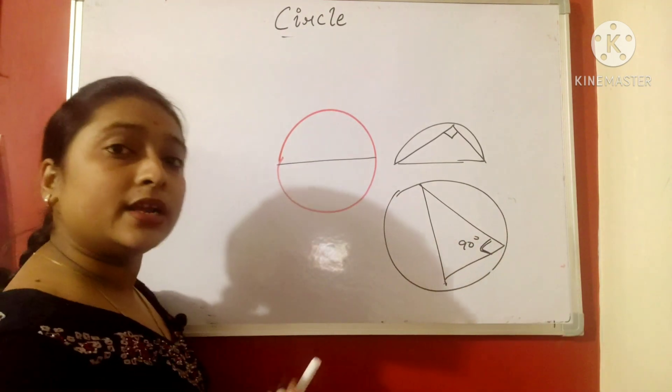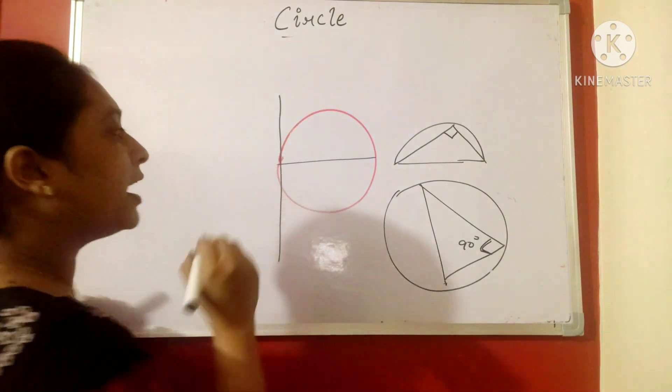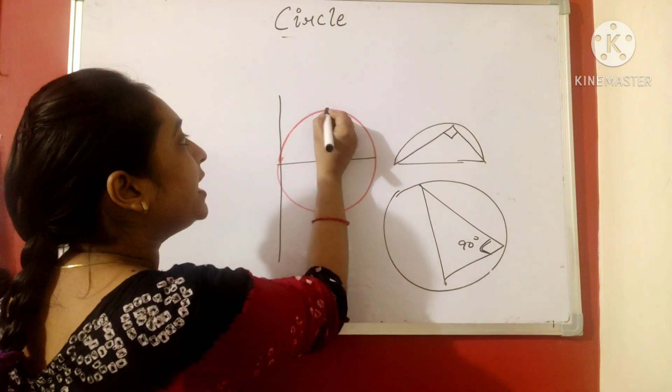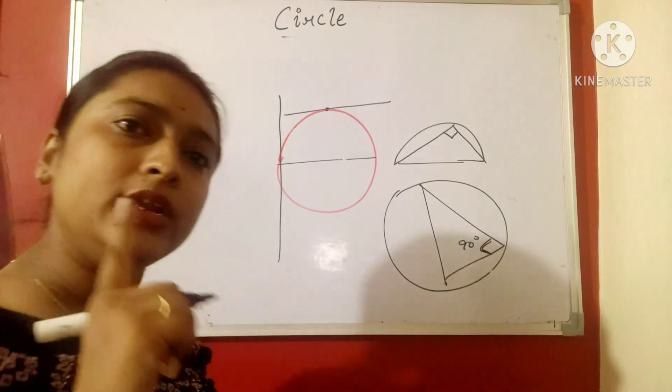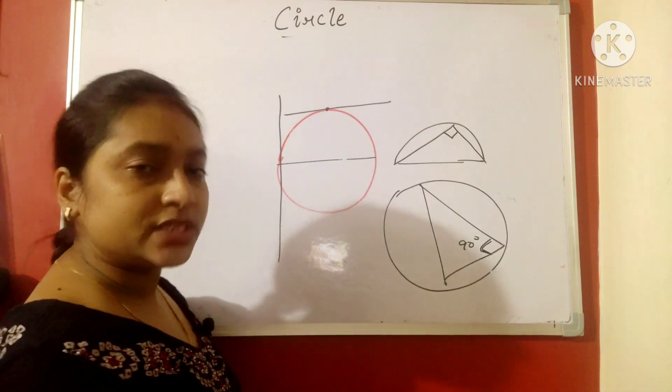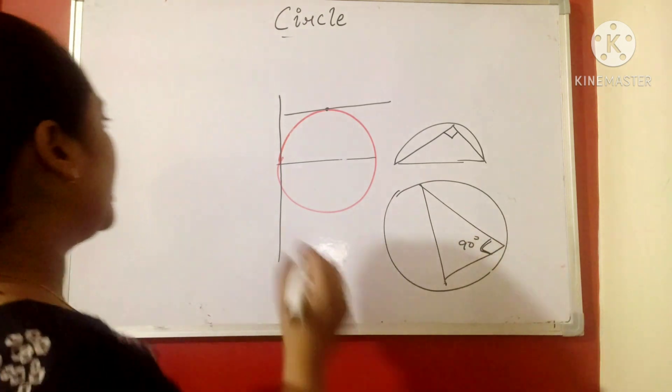Now, we come to the another word tangent. Tangent is what? It is a line. Tangent is a line that touches any one point of the circle and at every point only one tangent is possible. So this is a tangent which passes through the circle at only one point.